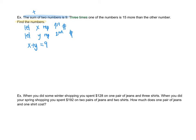The second sentence: three times one of the numbers is 15 more than the other number. Three times means multiplication. Is is an equal sign. Fifteen more means adding on 15. So three times X equals Y plus 15, giving us 3X = Y + 15. Now we have our system and can solve.